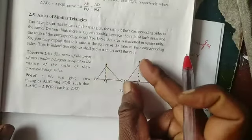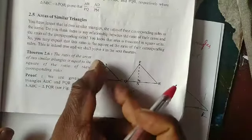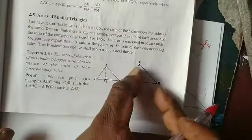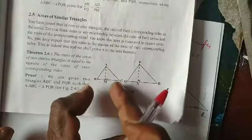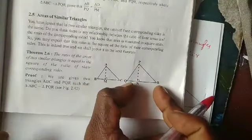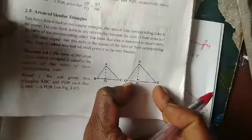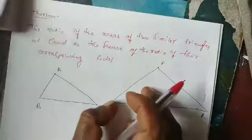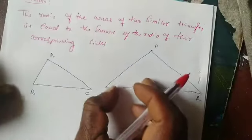The corresponding sides are: AB corresponds to PQ, AC corresponds to PR, and BC corresponds to QR. I have written the statement here.